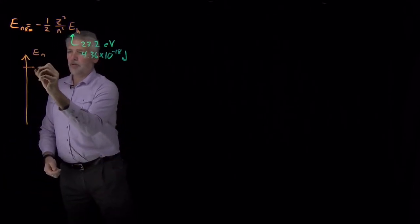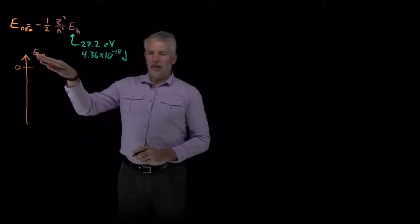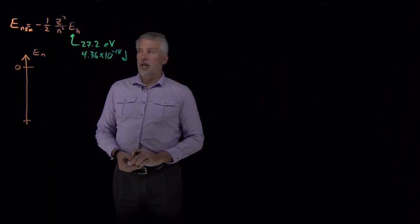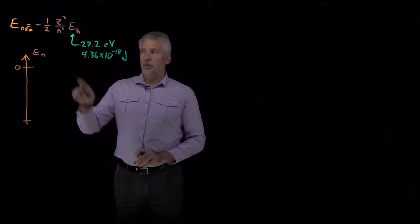Let me put a marker for zero up here. Energies are rising in this direction. The lowest energy an electron in a hydrogen atom can have, if it's a hydrogen atom in particular with Z equals 1,